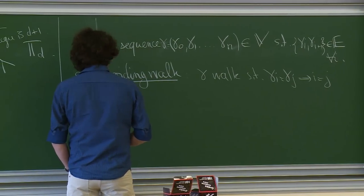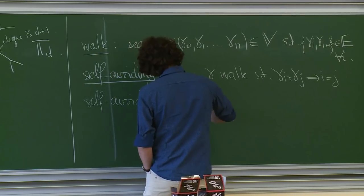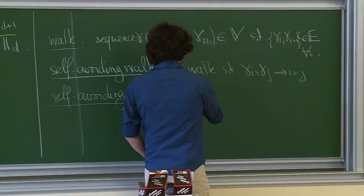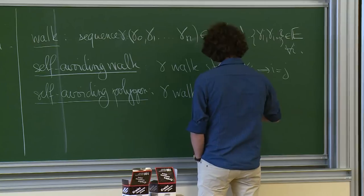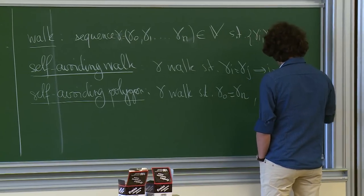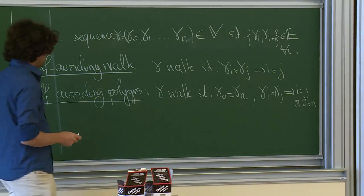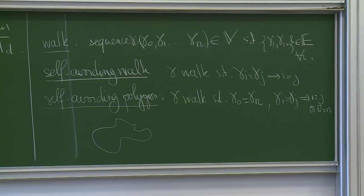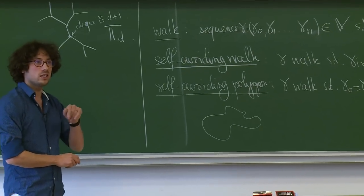We'll also introduce two other objects. A self-avoiding polygon is a walk such that γ_0 = γ_n — it goes back to the same vertex — and γ_i = γ_j implies i = j or {i,j} = {0,n}. So a self-avoiding polygon is simply a walk going back to its original point.